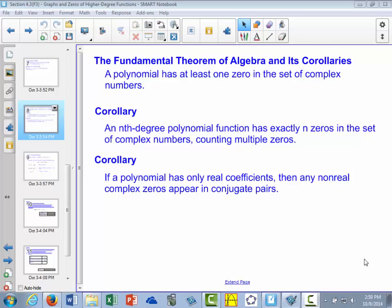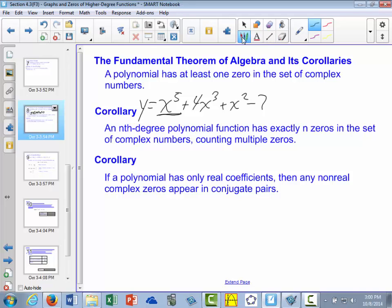So what that means is if we have a function that could be, let's say, x to the fifth plus 4x cubed plus x squared minus 7, there's our function y. Well, this polynomial, since it's the fifth degree polynomial, or nth degree is now the fifth degree, means that it must have exactly five zeros.